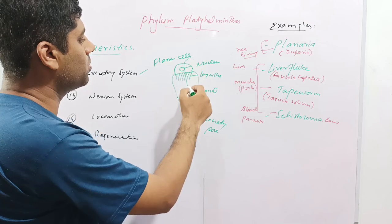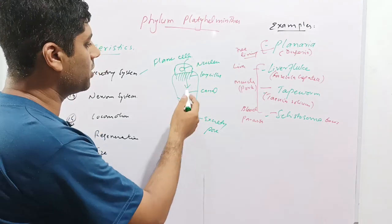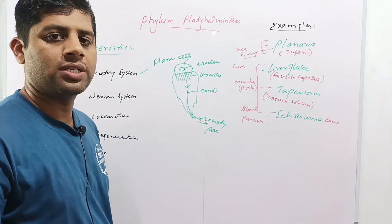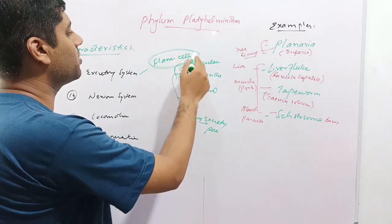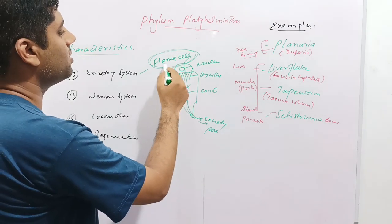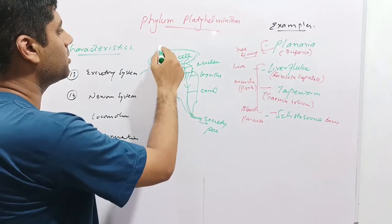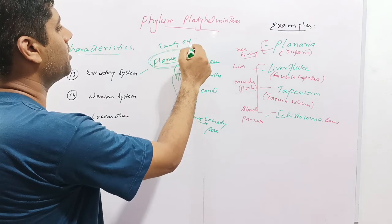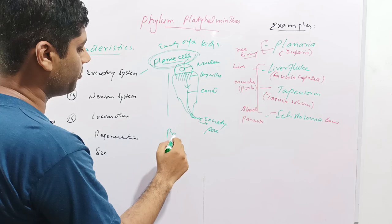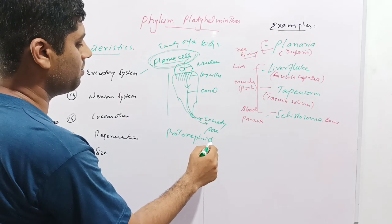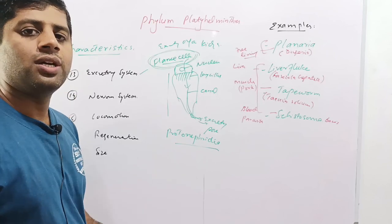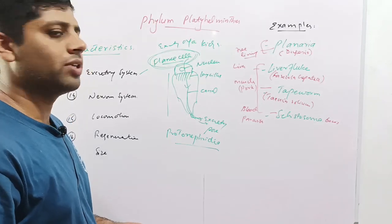The long cilia eject waste from the host cells to the lumen or canal, and it is excreted out through the excretory pore. These flame cells are the excretory organs in helminths and act as kidneys. So these are also termed protonephridia. Flame cells are called protonephridia because they are required for filtration of waste from the body of helminths.